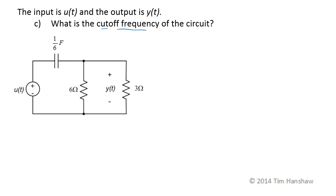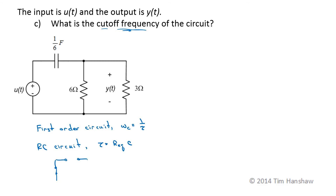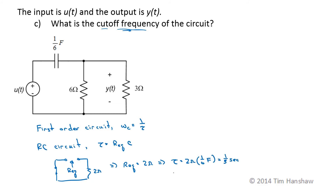Finally, let's check the cutoff frequency of the circuit. We can find that from the frequency response, but it's a little easier to notice that for a first-order circuit, the cutoff frequency is 1 over the time constant. For an RC circuit, the time constant is the equivalent resistance seen by the capacitor times the capacitance. If I kill the source and look at the equivalent impedance seen by the capacitor, this is an equivalent 2-ohm resistance. So R_eq equals 2 ohms, tau equals 2 ohms times 1/6 farads, which is 1/3 of a second. So I would expect omega_C to be 3 radians per second.